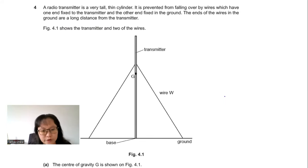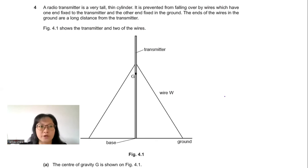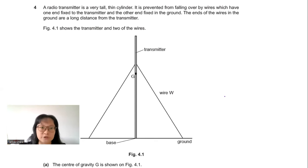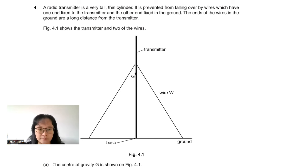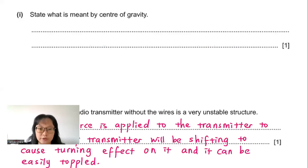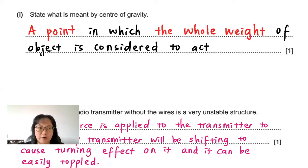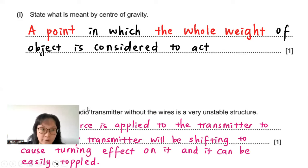Question 4: A radio transmitter is a very tall thin cylinder held upright by wires fixed to the ground. Part A: State what is meant by the centre of gravity. The centre of gravity is a point at which the whole weight of the object is considered to act. The key words are 'a point' and 'whole weight'.